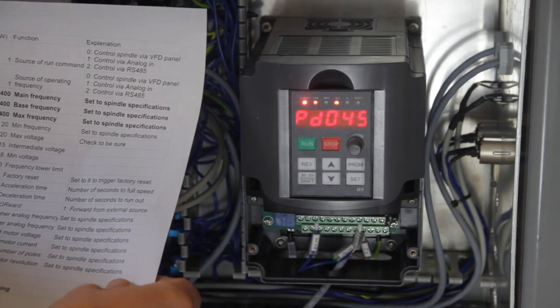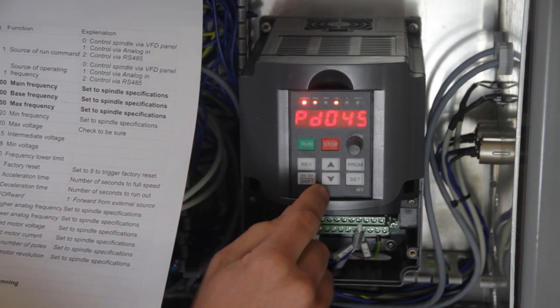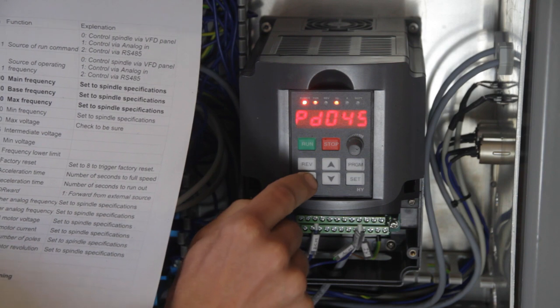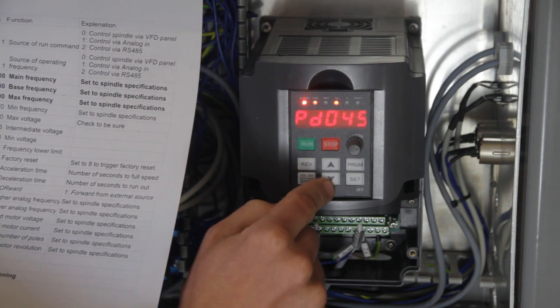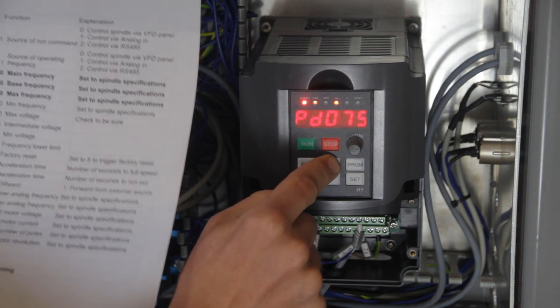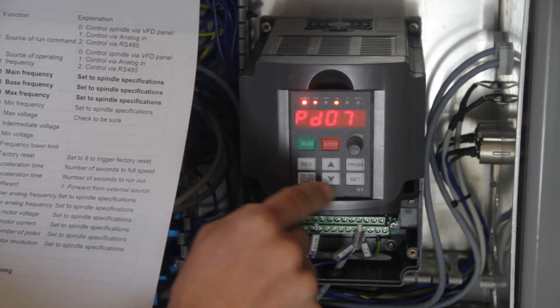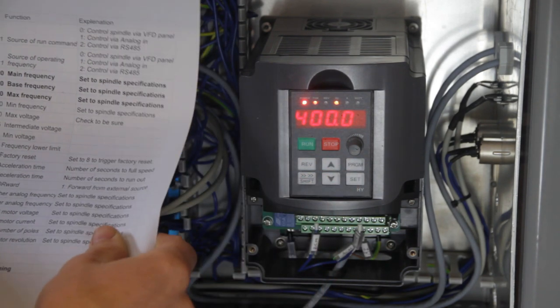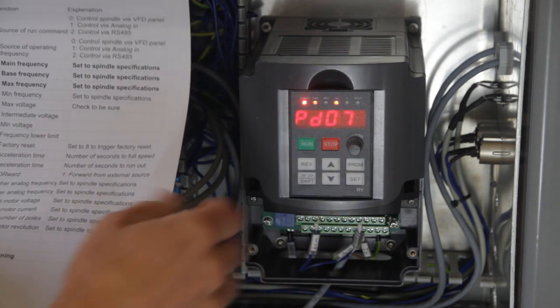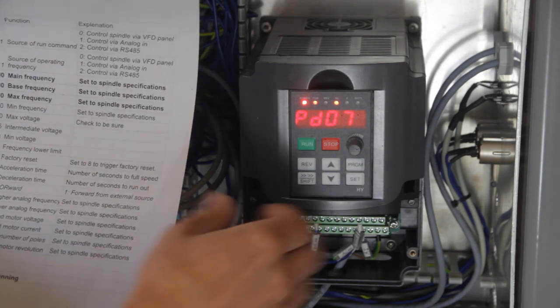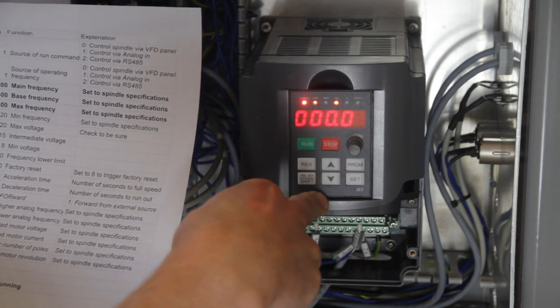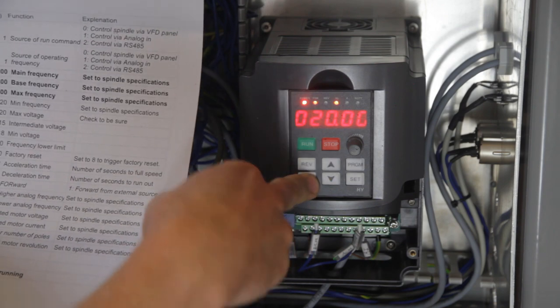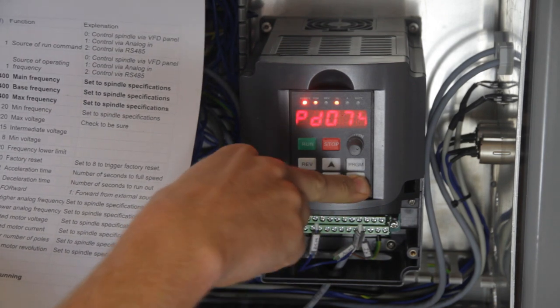Then PD72, program, shift, 7, 4. All right, 73 is 120 hertz, so that needs to be changed. Set.